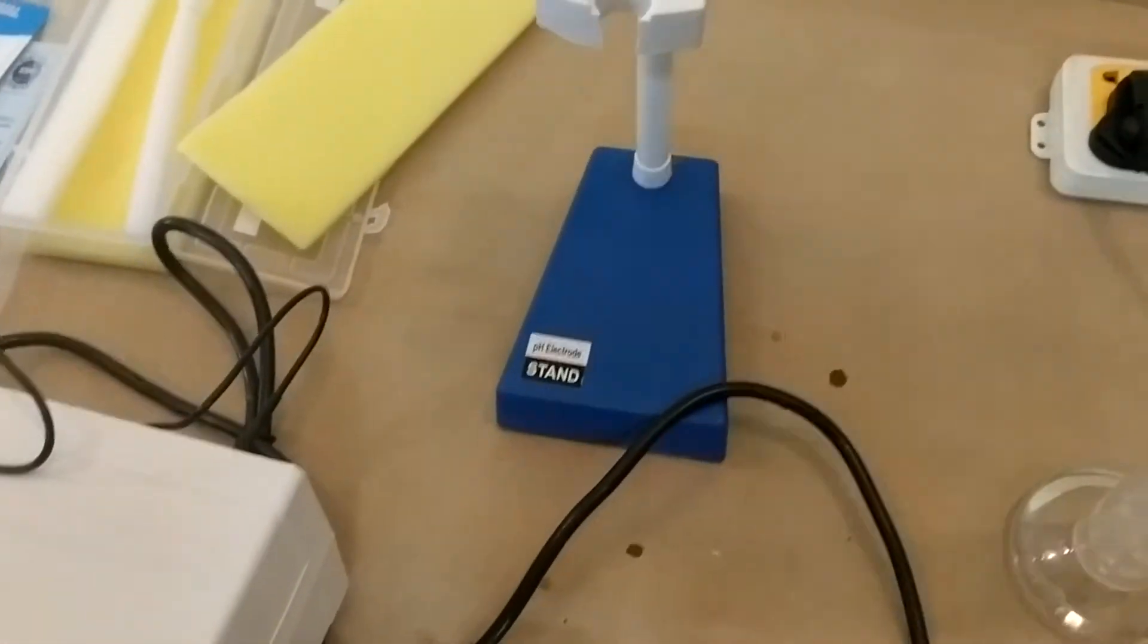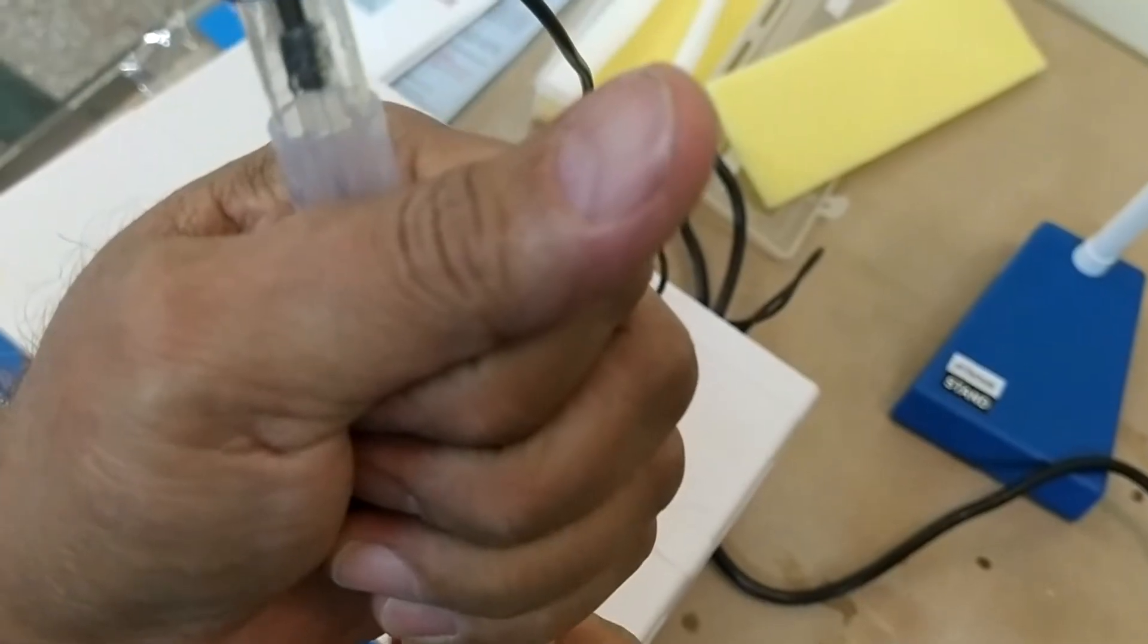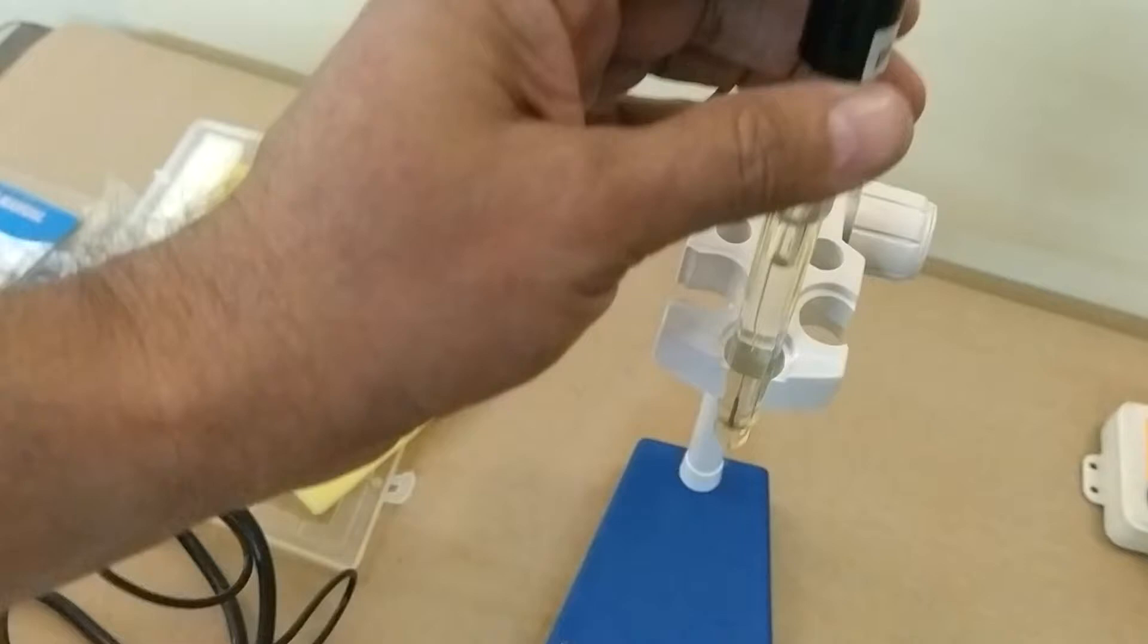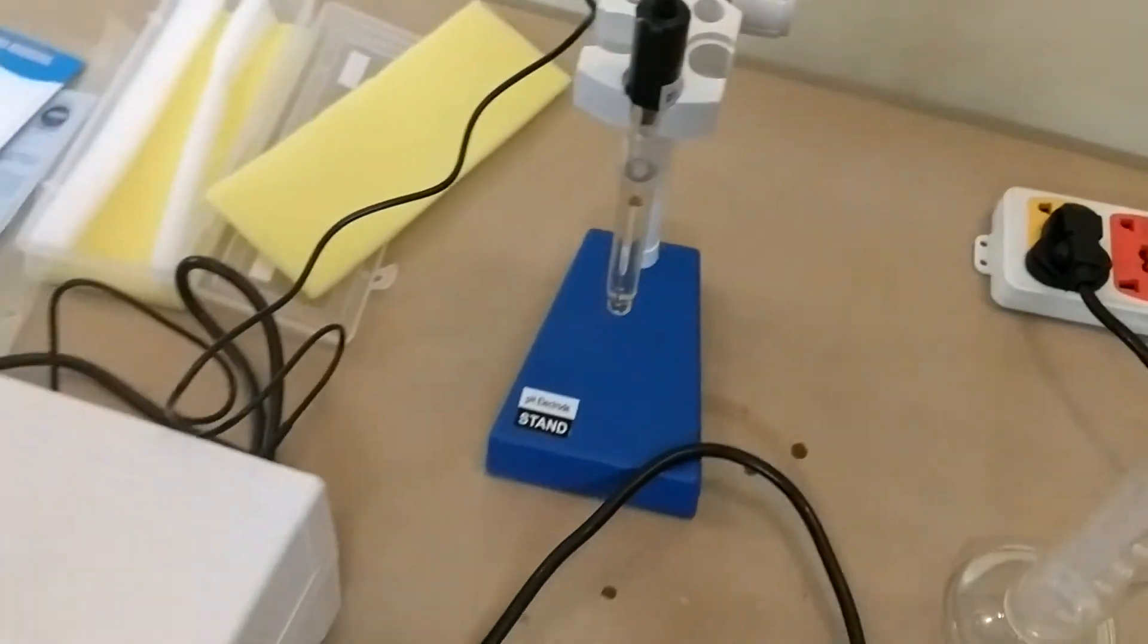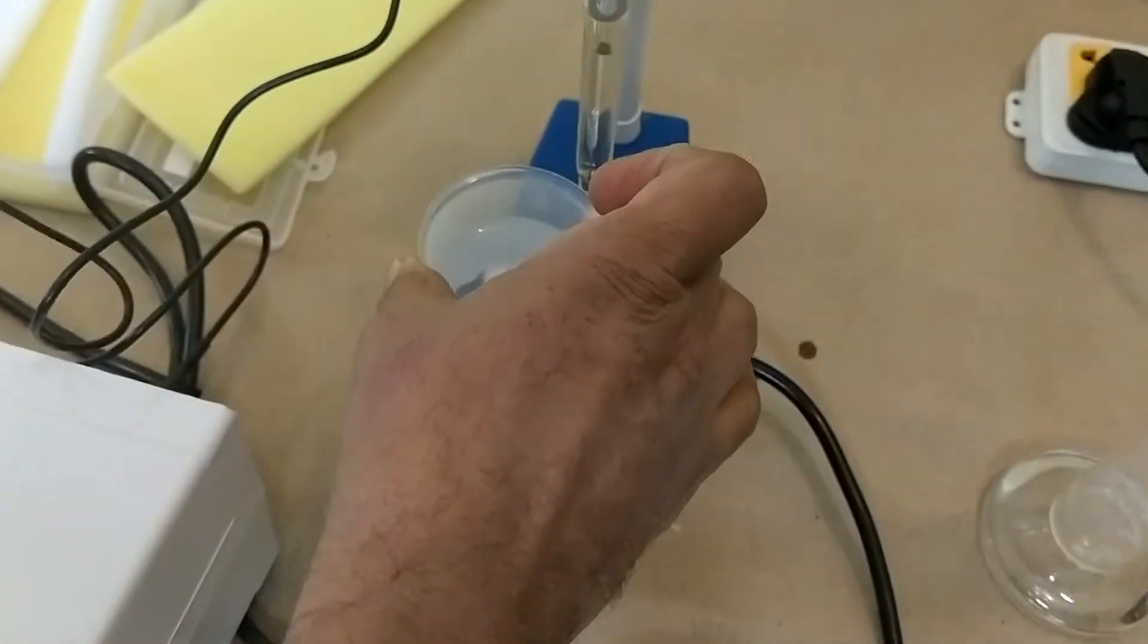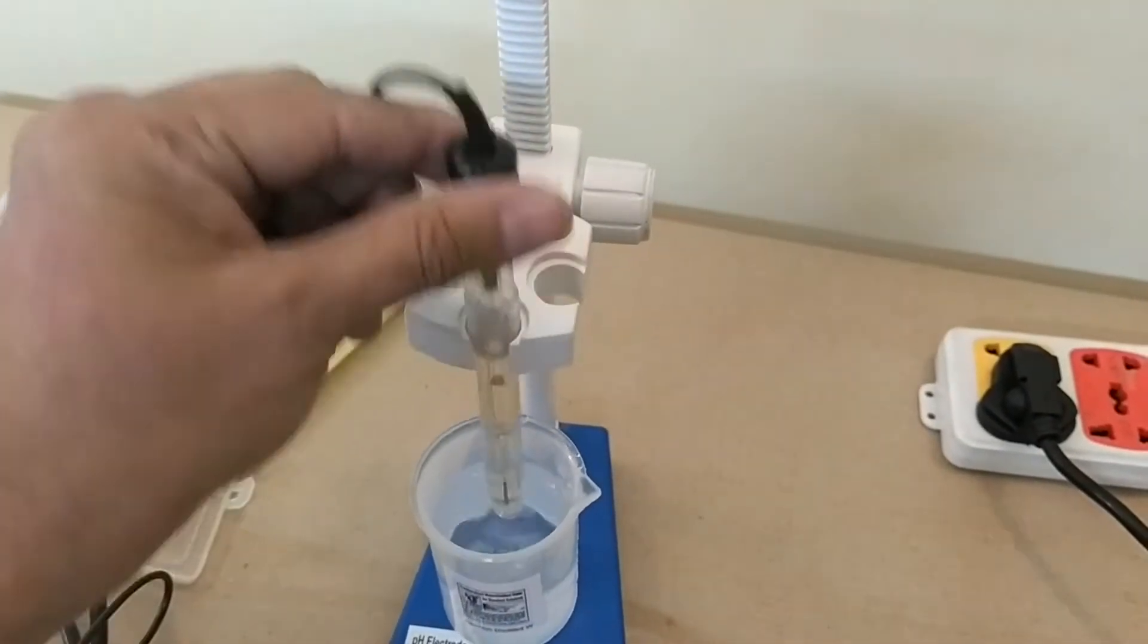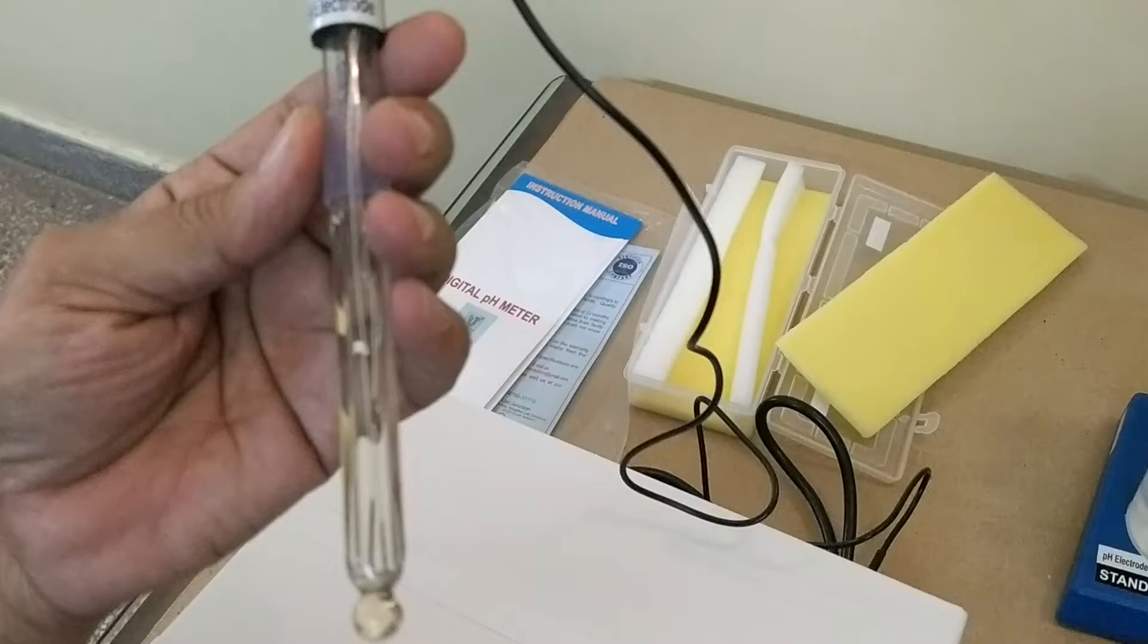How can you open the charger capsule of pH electrode? Always open this. Now you can stand in this way. Always dip pH electrode in 7 pH buffer solution or distilled water like this. Always wet pH electrode in 7 pH buffer solution or distilled water.